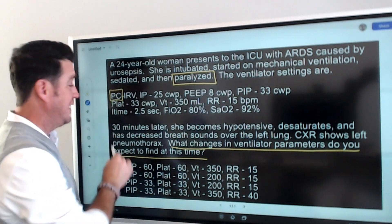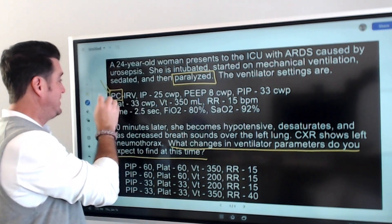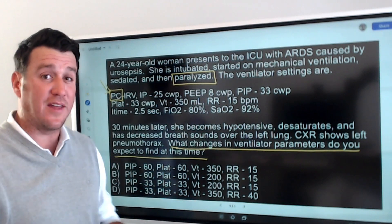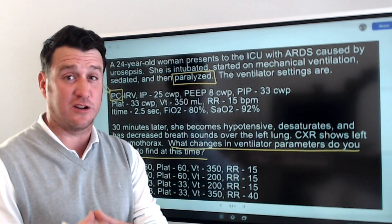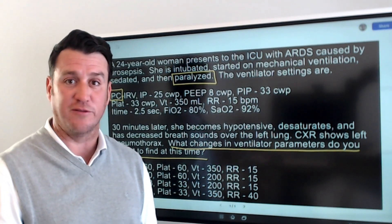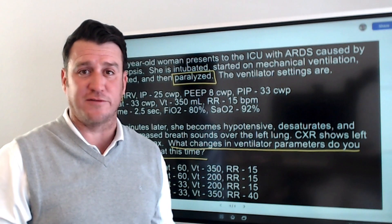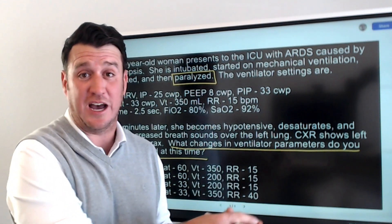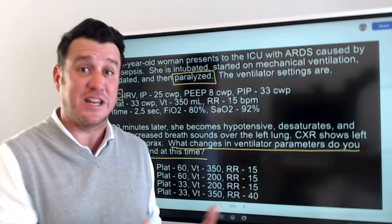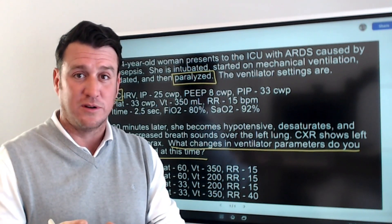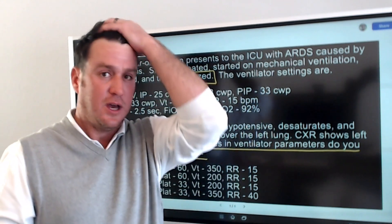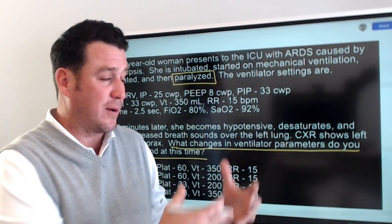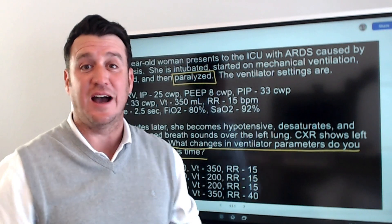They put the patient on PCIRV — pressure control IRV. This is extremely important. Recognizing pressure control is the most important aspect of answering this question correctly. Now the IRV — inverse ratio ventilation — is probably just there to throw you off. If you're not familiar with IRV, you might panic, but IRV just means you have a longer inspiratory time than expiratory time — an inverse I:E ratio. It's a distractor. It's just telling you you're in pressure control with an inverse I:E ratio.